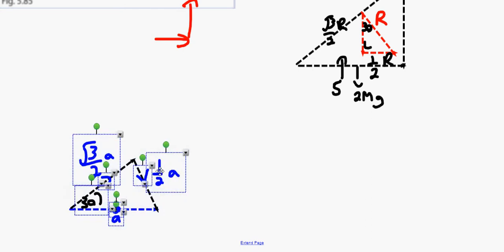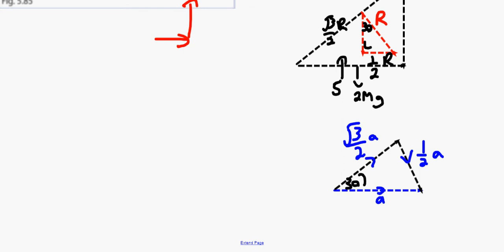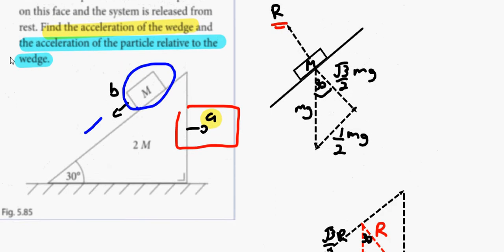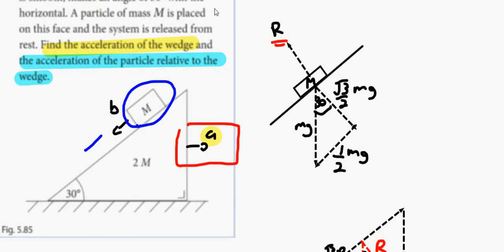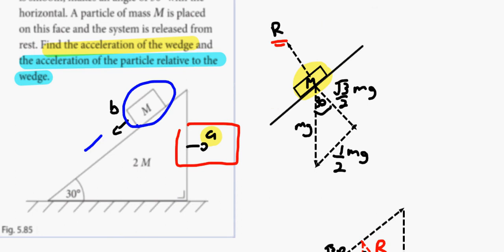Now I have all this information. There are several formulas we're going to need. For any particle on the plane we have two formulas: parallel to the plane and perpendicular to the plane. We're going to start off with parallel to the plane.